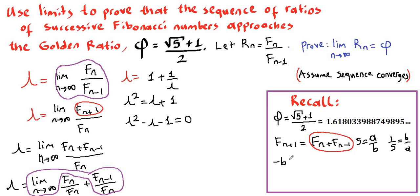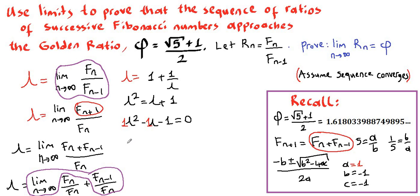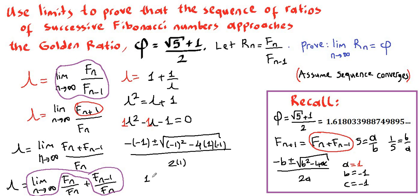Let's recall the quadratic formula: negative b plus or minus square root of b squared minus 4ac, all divided by 2a. Our coefficient a is 1 (from the lambda squared term), b is negative 1 (the coefficient of the middle term), and the constant c is negative 1. Plugging in, we get negative 1 plus or minus the square root of negative 1 squared minus 4 times 1 times negative 1, all over 2 times 1. This simplifies to 1 plus or minus square root of 5 divided by 2.